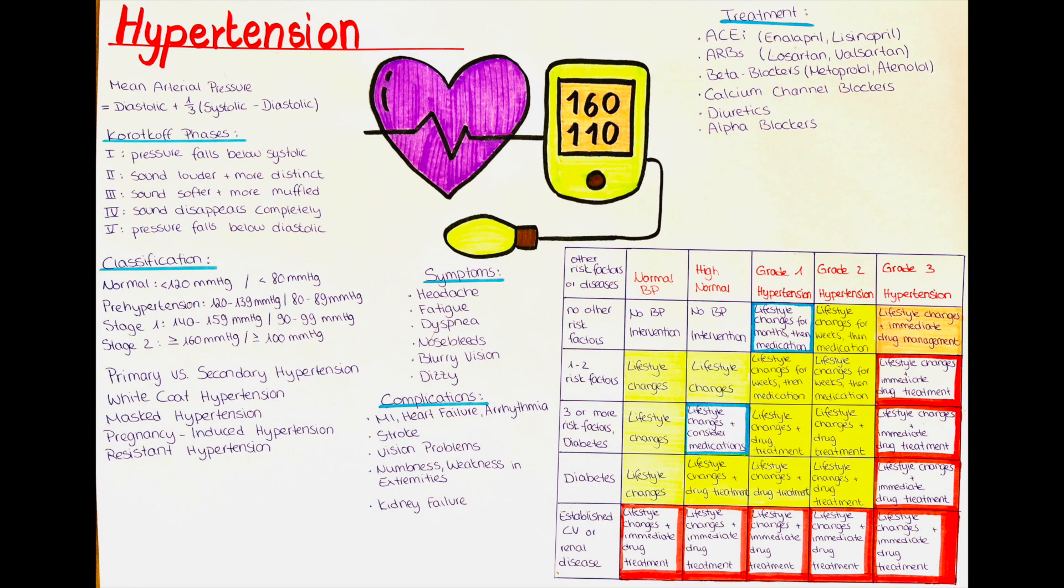Alpha blockers inhibit alpha-adrenergic receptors, relaxing blood vessels. Centrally acting drugs reduce sympathetic nervous system activity, leading to decreased vessel constriction. They play a role in lowering blood pressure too.